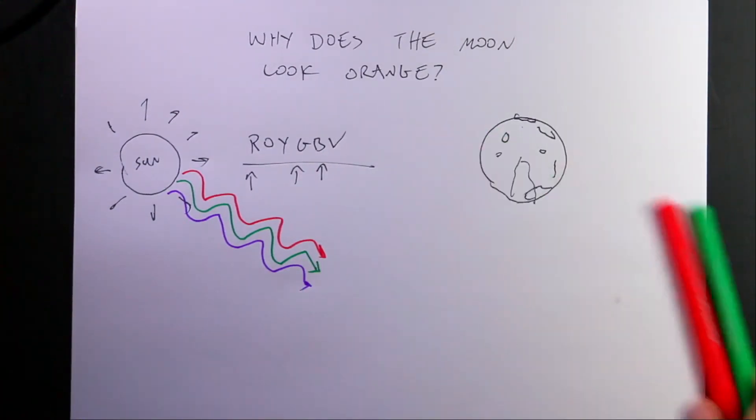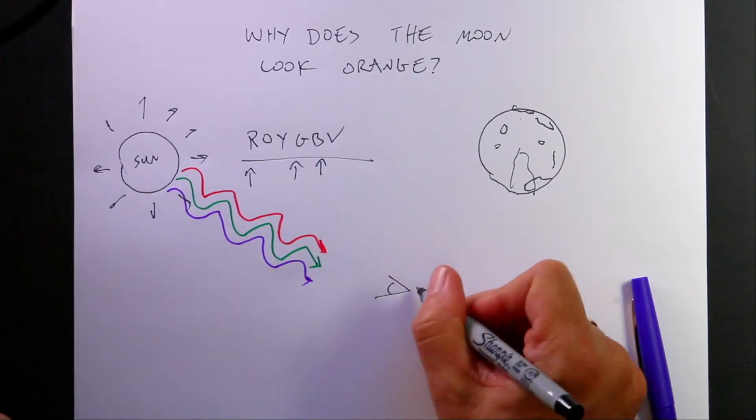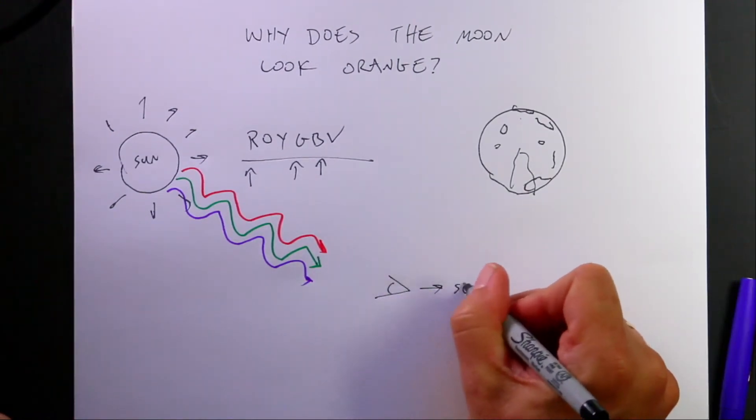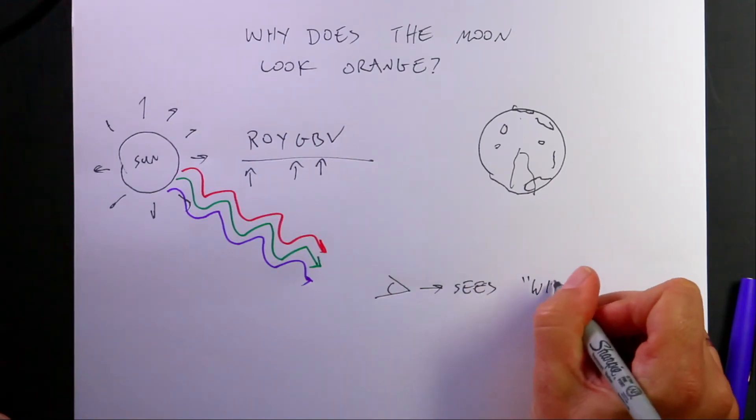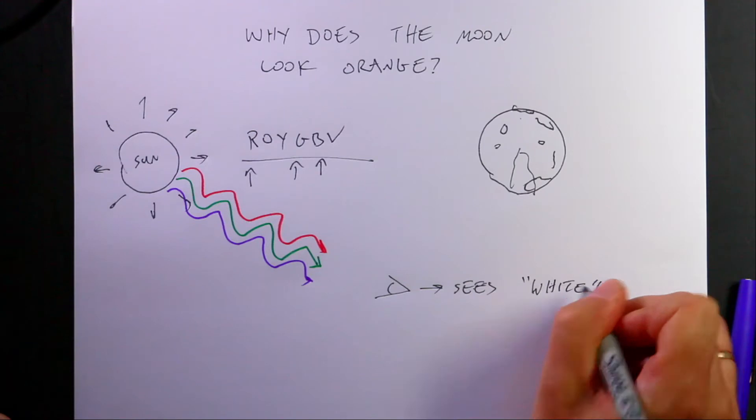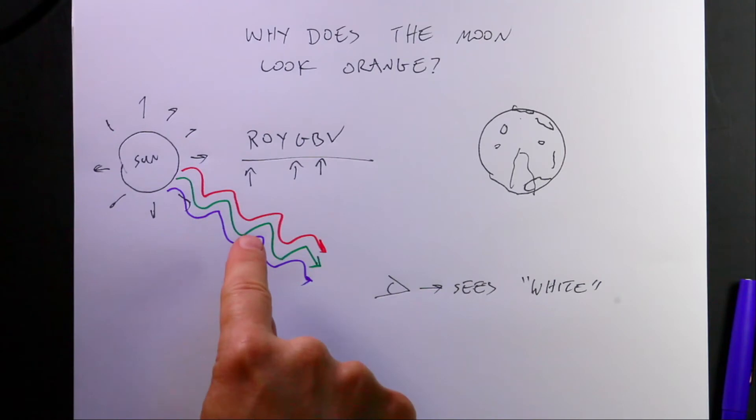Now, if we see that with the human eye, our brain sees white. If you combine all three of those colors together, our brain interprets that as white. You may think, oh wait, if you mix all the colors together, you get brown. That's paint. I have another picture I'm going to show you to prove to you that the combination of these three colors makes white.